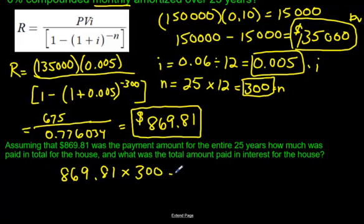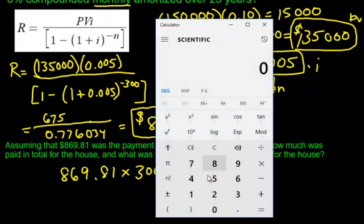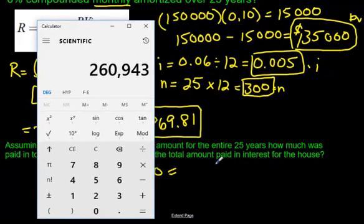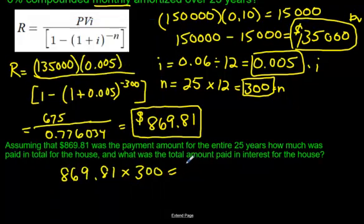This is going to be expensive. Let's use our calculator. 869.81 times 300. Wow. 260,943. You're paying $260,943 for that house in reality.